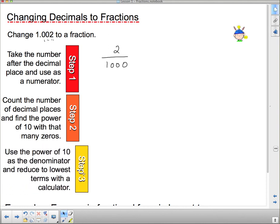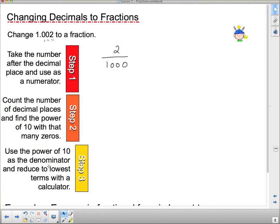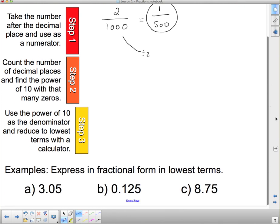And then, step 3 says, use the power of 10 as the denominator and reduce to lowest terms with a calculator. So, you may have a calculator that has fractions on it. If not, just see if there's a number that goes into both of those. I just happen to know that since the bottom is even, they're both divisible by 2. And so, what I have to do is divide the top by 2 and divide the bottom by 2 in order to get it into lowest terms. So, when I divide the top by 2, I get 1. When I divide the bottom by 2, I get 500. And so, this is my answer in lowest terms. If you have a calculator that has a fraction button, feel free to use it to do lowest terms.